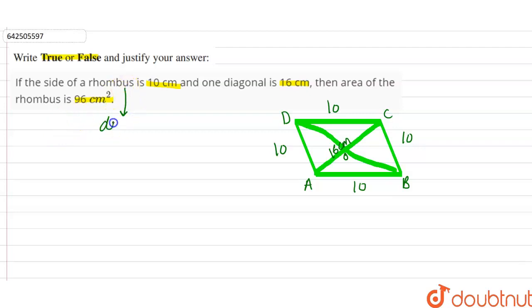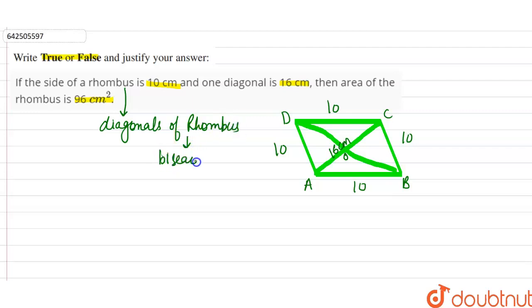Now there is this property of a rhombus: the diagonals of a rhombus bisect each other at 90 degrees.